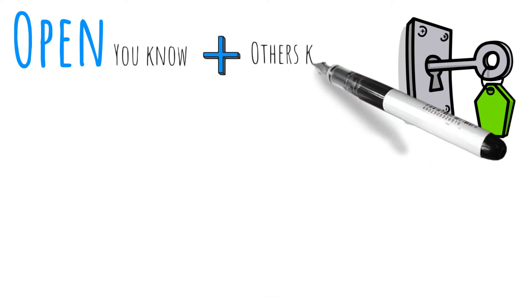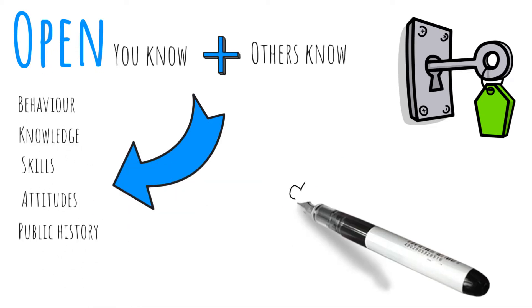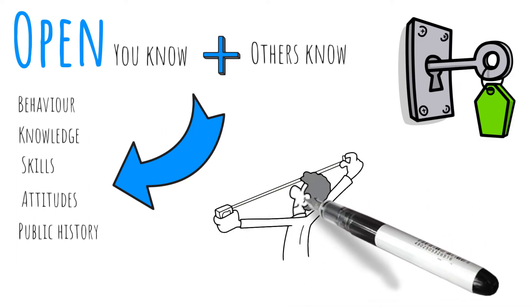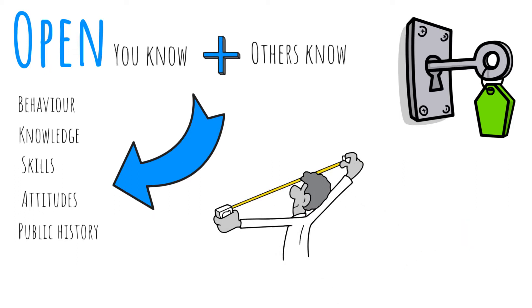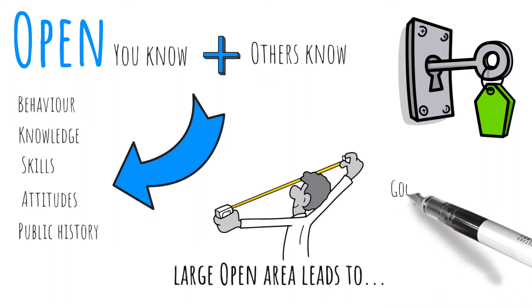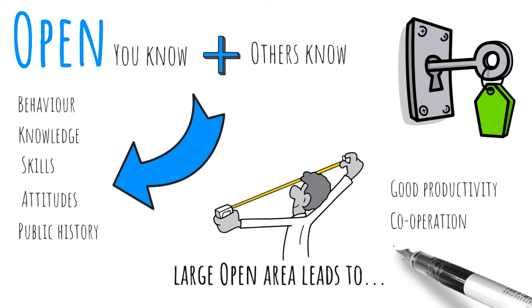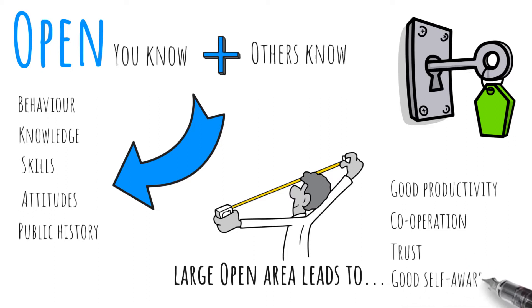Open — also known as your public self. This is what is known about you by others, including your behaviour, knowledge, skills, attitudes and public history. There are no secrets here. People tend to be more productive, cooperative and trusting when they know more about themselves and one another. Therefore, the Johari window ideally has a large open area. A large open area can indicate good self-awareness about your abilities, feelings and behaviours. Someone who has a small open area may be young, new to a job, an introvert, uncommunicative, or difficult to work with.